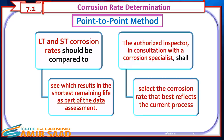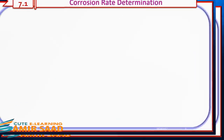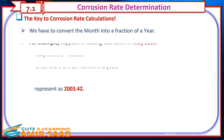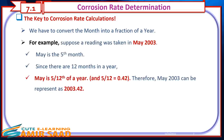The authorized inspector, in consultation with a corrosion specialist, shall select the corrosion rate that best reflects the current process. A key note on corrosion rate calculations: we must convert months into a fraction of a year. For example, a reading taken in May 2003 — May is the fifth month, so five-twelfths of a year equals 0.42. Therefore, May 2003 is represented as 2003.42.